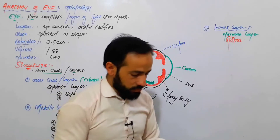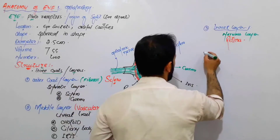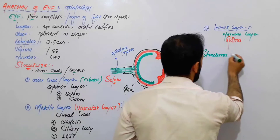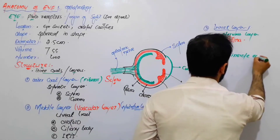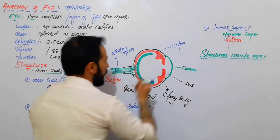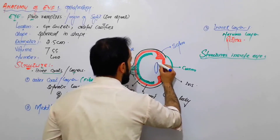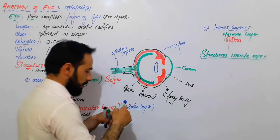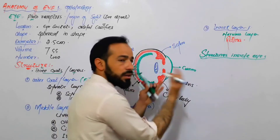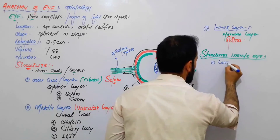There are also some other structures inside the eye. Look carefully — here we have a suspended part and this suspended part is called the lens. So inside the eye, we have many structures, but one of them is the lens of the eye.